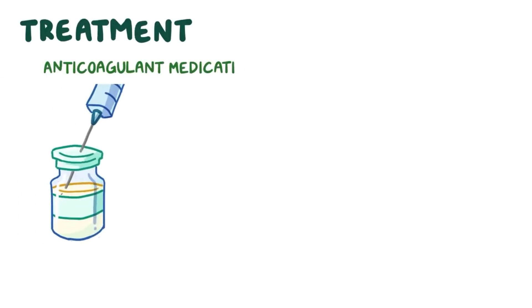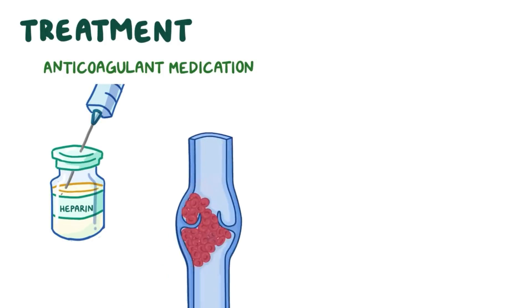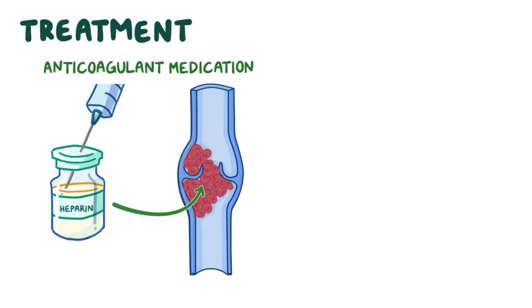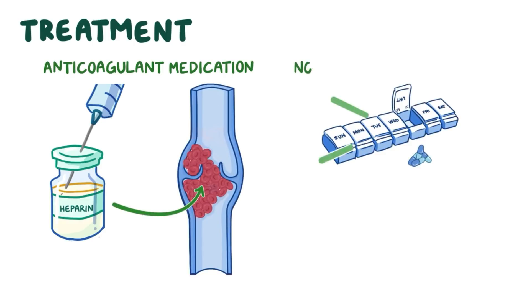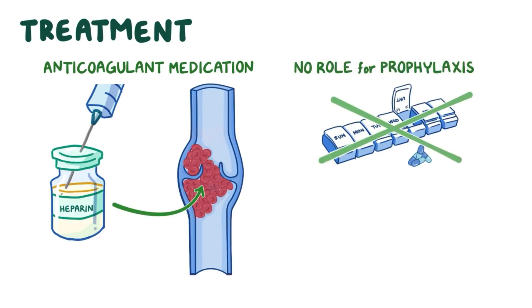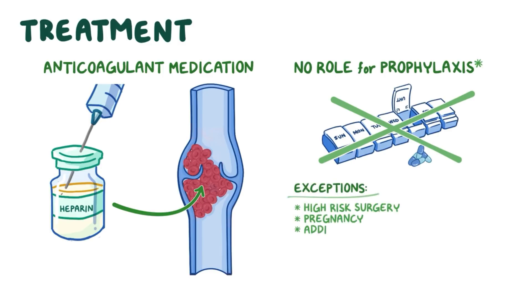Treatment with anticoagulant medication like heparin is required when the person develops a venous thromboembolism. Interestingly, studies have demonstrated there is no role for venous thromboembolism prophylaxis in people with factor V Leiden, except those at risk during surgery, pregnancy, or in the presence of additional thrombophilic mutations.